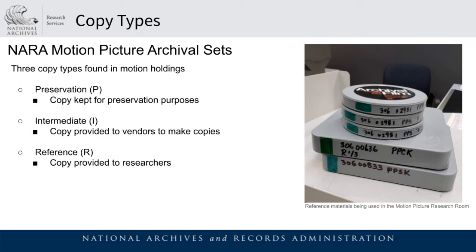Intermediate or I copies are provided to vendors so they can make copies for researchers who order them — they're also what we try to make reference copies from. Reference or R copies are what we provide to researchers. These copies tend to be the most beat up since they are heavily used, and we focus more on allowing access rather than preservation for these copies.